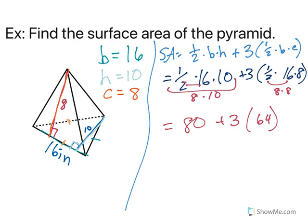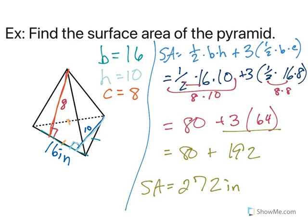Then 64 times 3 is 192. Remember, we have to deal with the order of operations. So our surface area is 272 square inches. So if you wanted to wrap this present, you would need 272 square inches to cover all four sides.